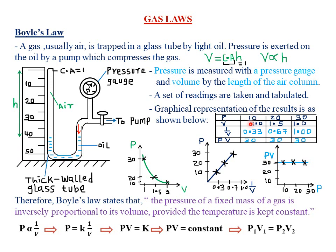Mathematically, pressure P is inversely proportional to volume V. To remove the proportionality symbol we introduce a constant k, so P = k × (1/V). Multiplying both sides by V gives PV = k, meaning the product of pressure and volume is always constant. Regardless of variations in pressure, the product PV will always equal the same constant value.